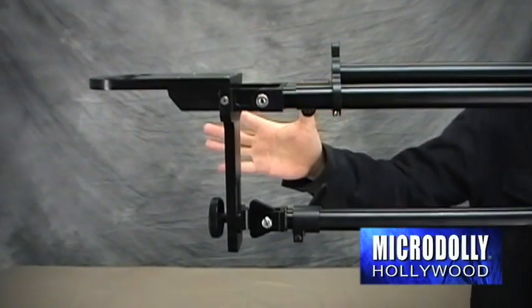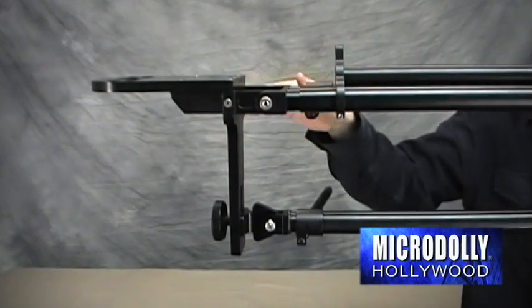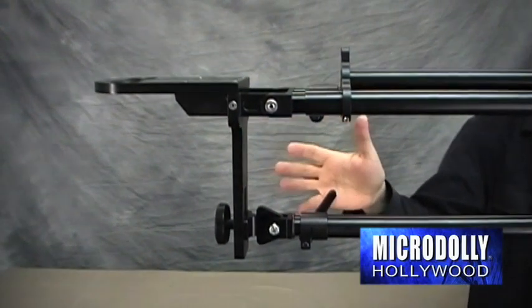A great innovation of the MicroDolly jib is a camera plate that can adjust the camera tilt as the boom rises or falls to maintain the camera point of view.